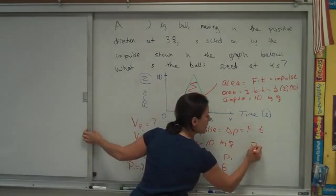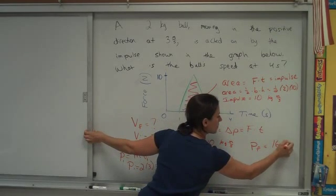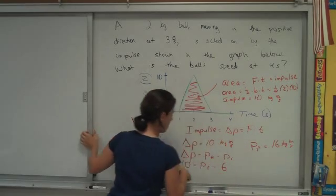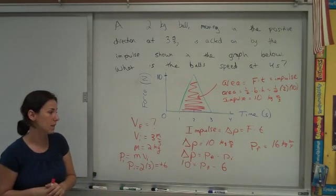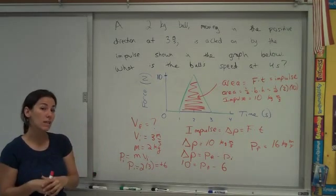So the end momentum, if I solve for this, must be 16 kg·m/s. Starting at 6, adding 10 gives me a final momentum of 16. We're just one step away from saying, what velocity does that correspond to?